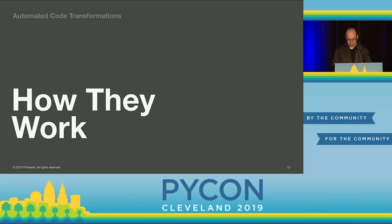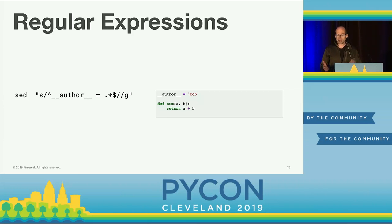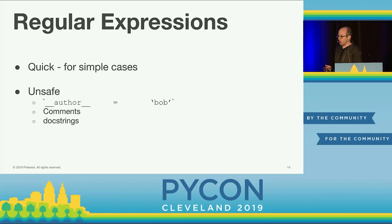The most common approach is still regex. Regular expressions work really well for simple cases — it's often the first thing people try. For example, to remove author tags from code, you could use something like sed to remove the line, and it'll work. But this isn't safe for all cases — it's quick but only works in very simple scenarios. Regular expressions are often not a great long-term solution for transformations; they're good for quick one-off changes but you often have to manually review everything for safety.